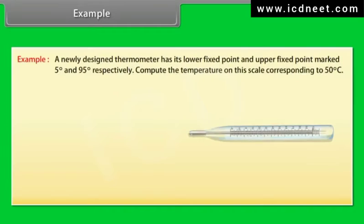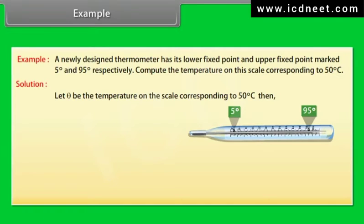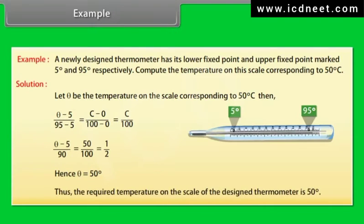Example on measurement of temperature: A newly designed thermometer has its lower fixed point and upper fixed point marked 5 degrees and 95 degrees respectively. Compute the temperature on this scale corresponding to 50 degrees Celsius. Let theta be the temperature on the scale. Then theta minus 5 upon 95 minus 5 is equal to C upon 100. Simplifying: theta minus 5 upon 90 is equal to 50 upon 100. Hence theta is equal to 50 degrees.